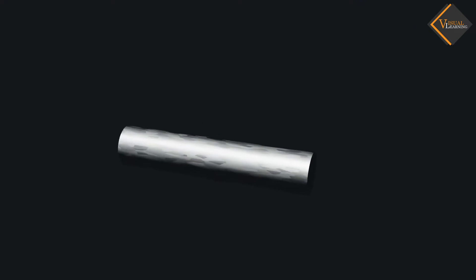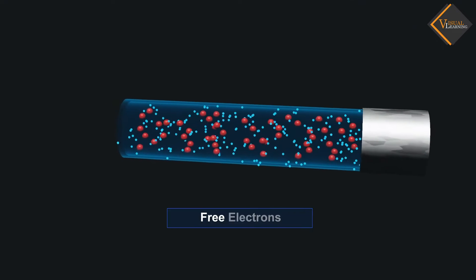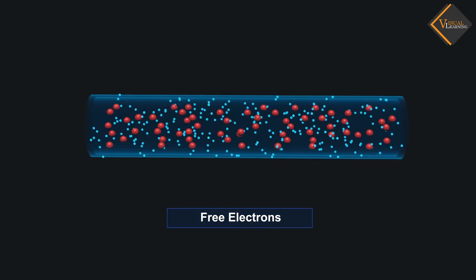In metallic conductor, there are free electrons which can move freely within the conductor.